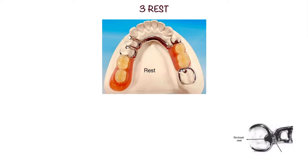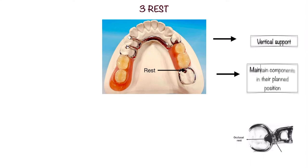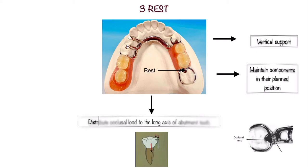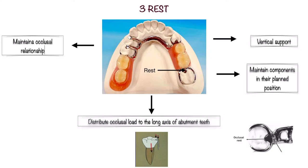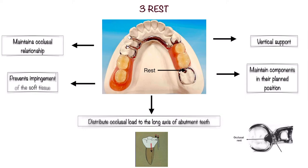Next comes the rest. The rest provides vertical support to the denture, and by providing this vertical support it maintains the components in their planned position and directs occlusal load to the long axis of the abutment teeth. It also prevents impingement of the soft tissue and maintains occlusal relationship.